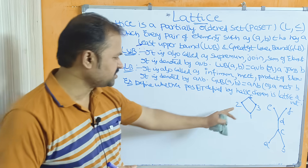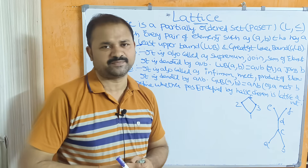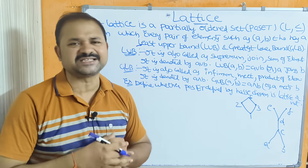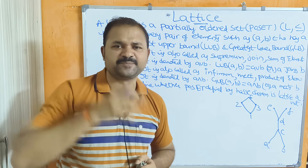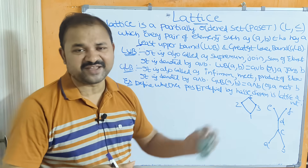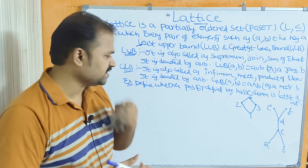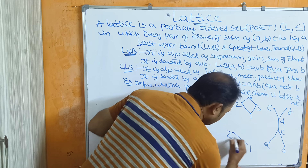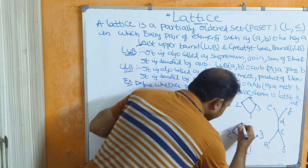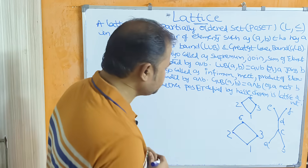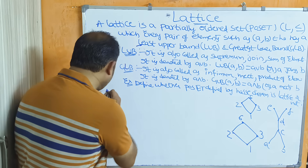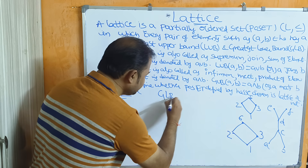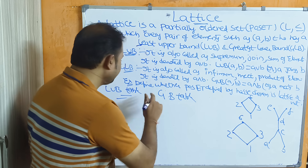We have two examples. The first is one Hasse diagram and the second is another. We need to determine whether the poset defined by each Hasse diagram is a lattice or not. For the first example, we need to construct two tables: the LUB table (least upper bound) and the GLB table (greatest lower bound).